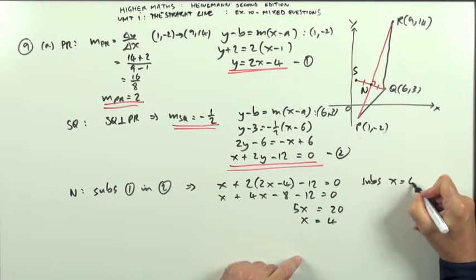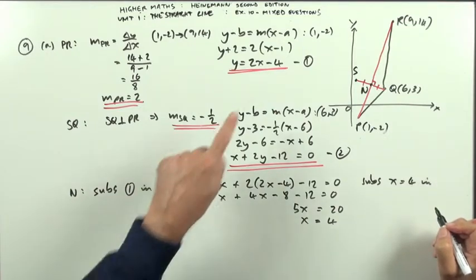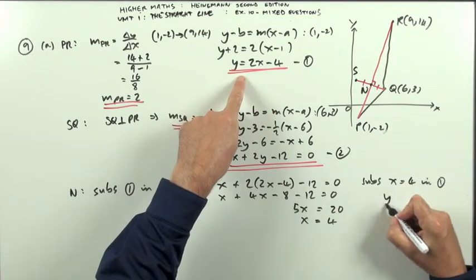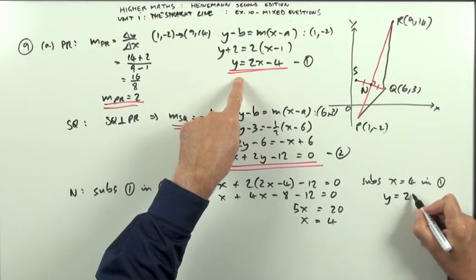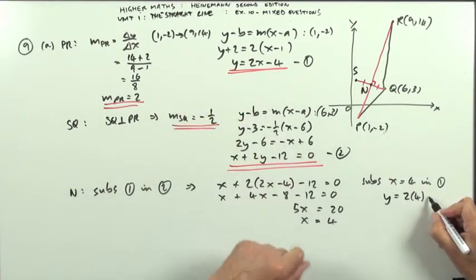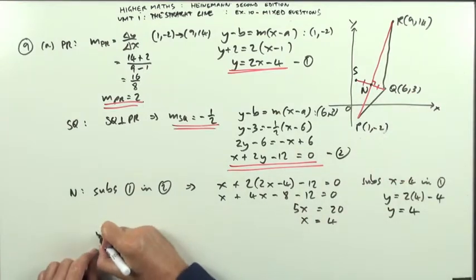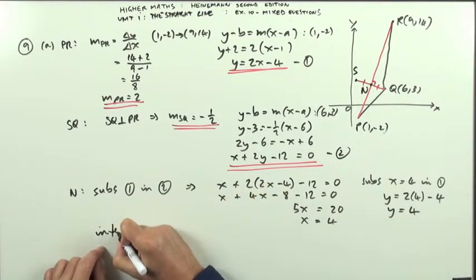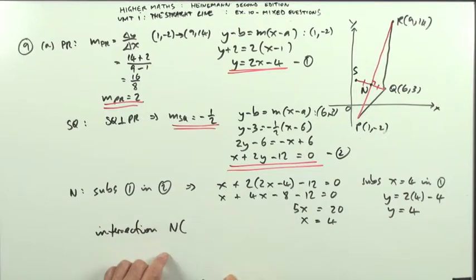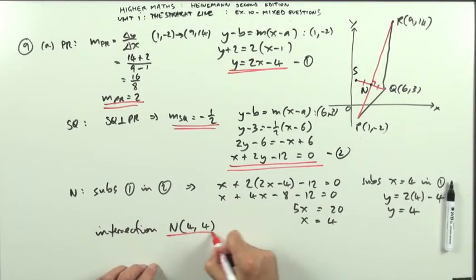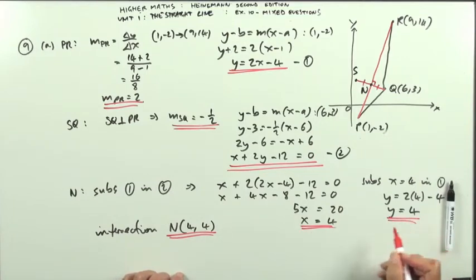And then substitute x = 4 into number 1, because that'll give you y directly. So 2 times 4 minus 4, so I'll just be 4. So y = 4. So that's the point (4, 4). Intersection, N, is (4, 4). That'll be part A.